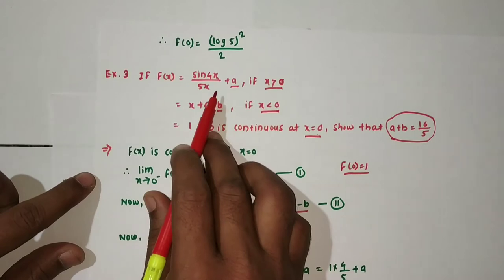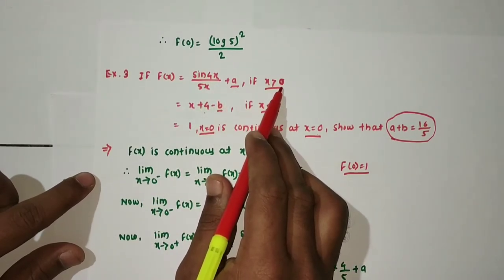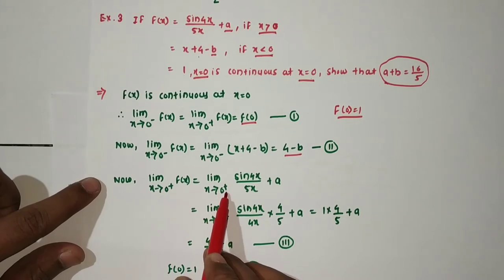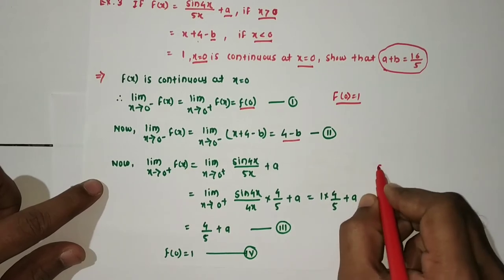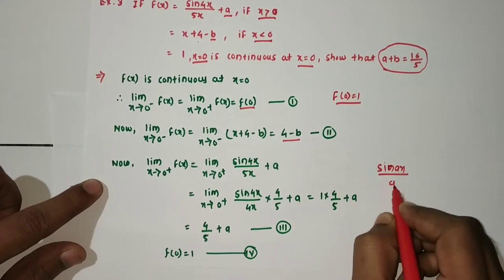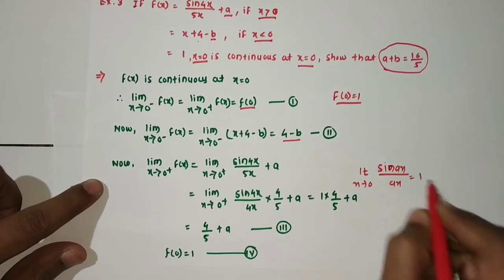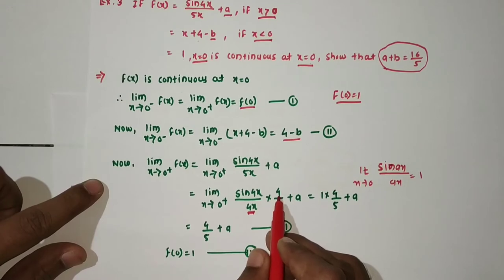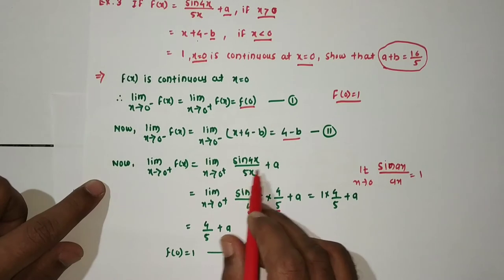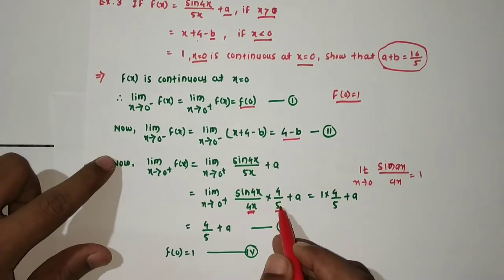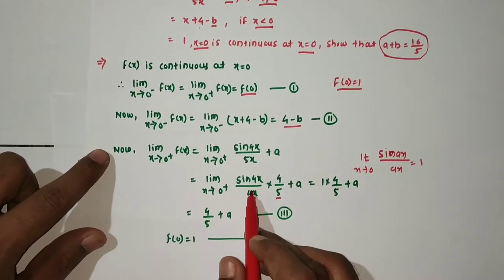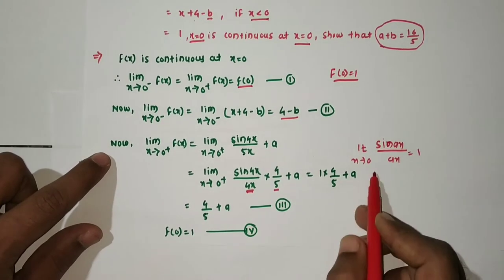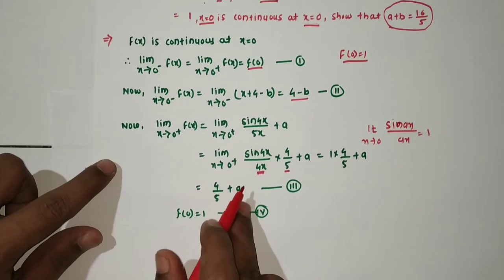For the right hand limit: limit as x tends to 0+ of f(x) = limit as x tends to 0+ of sin4x/(5x) + a. Since x > 0, we use this piece. We know limit as x→0 of sin(ax)/(ax) = 1, so we adjust: multiply and divide by 4x to get sin4x/(4x) · 4/5 + a, giving right hand limit = 4/5 + a. Call this equation 3.